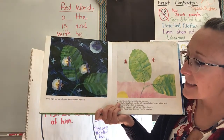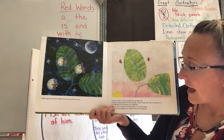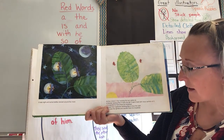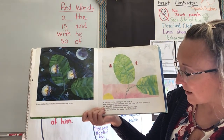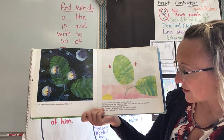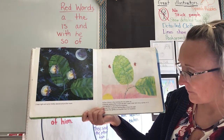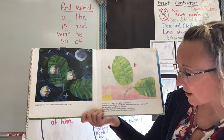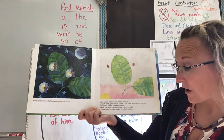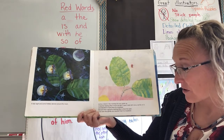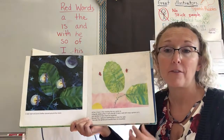It was night and some fireflies danced around the moon. At five o'clock in the morning, the sun came up. A friendly ladybug flew in from the left. It saw a leaf with many aphids on it and decided to have them for breakfast. But just then, a grouchy ladybug flew in from the right. It too saw the aphids and wanted them for breakfast.